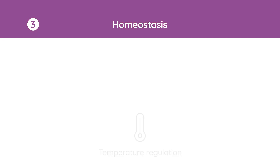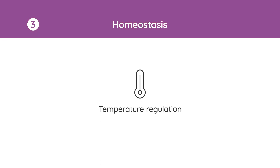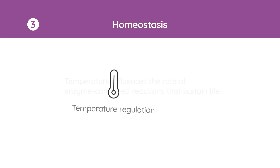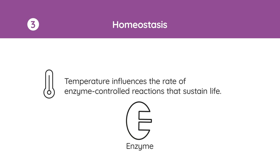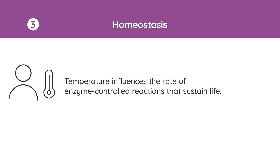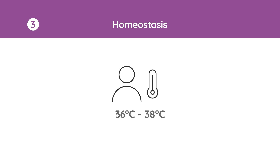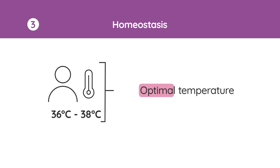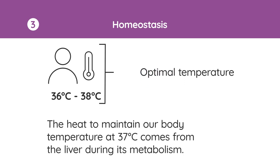Let's take a look at temperature regulation as an example of homeostasis. Temperature influences the rate of enzyme-controlled reactions that sustain life. The human body temperature is usually between 36 to 38 degrees C, which is why we say that our average temperature is 37 degrees C. This is the optimal or best temperature for our cells to work at.